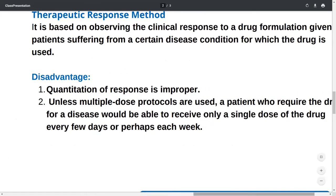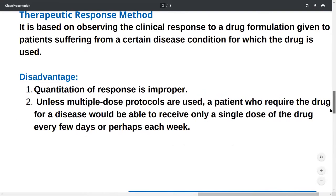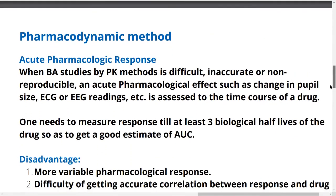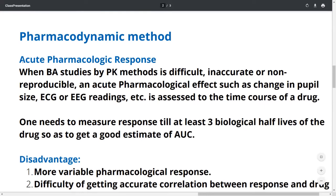Bioavailability can be measured by pharmacokinetic or pharmacodynamic methods. In the pharmacodynamic method, you can measure the drug by acute pharmacological response. When bioavailability studies by pharmacokinetic methods are difficult, inaccurate, or non-reproducible, an acute pharmacological effect such as change in pupil size, ECG, or EEG readings can be assessed as a function of time. One needs to measure the response for at least three biological half-lives of the drug to get a good estimate of AUC.